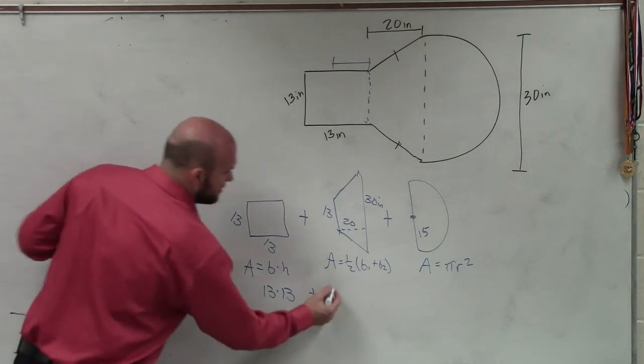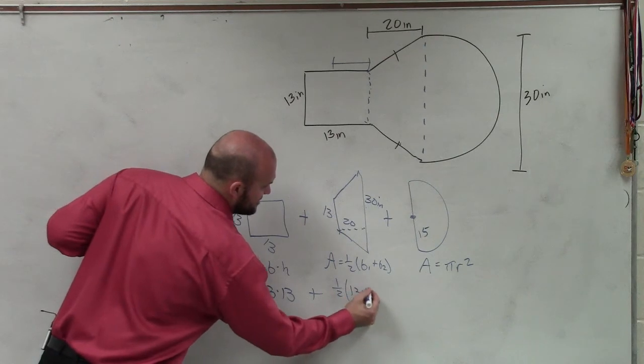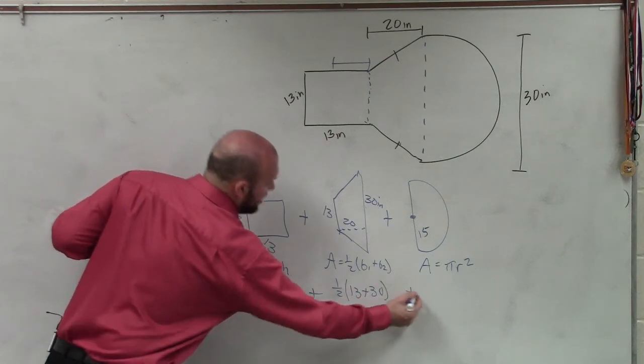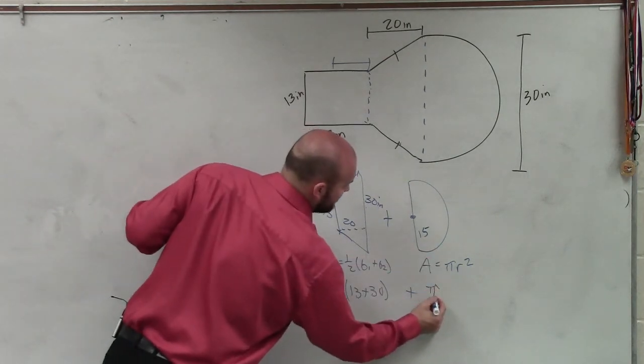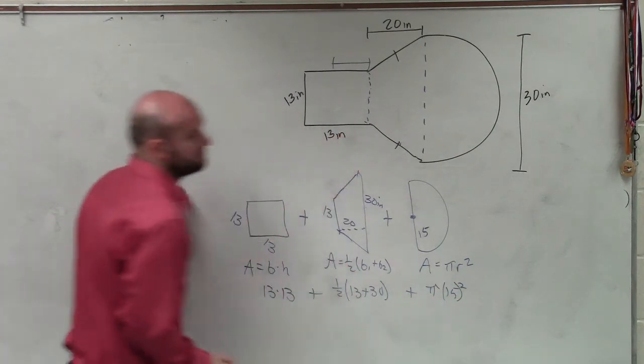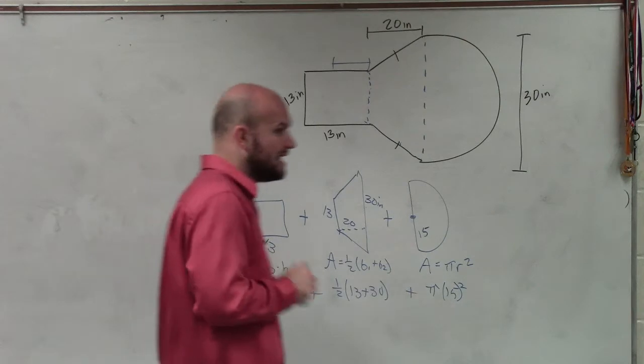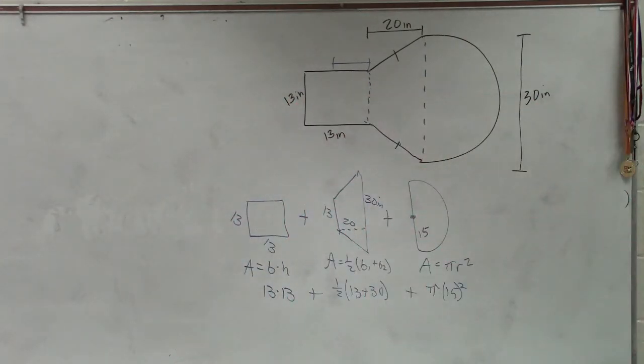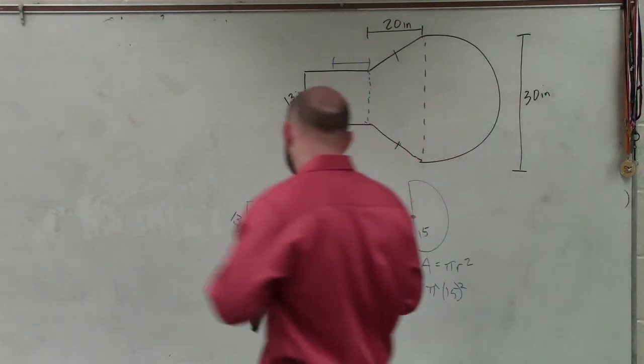Plus one half, 13 plus 30, plus this area is pi times 15 squared. So now, I just take my handy dandy calculator, and I just compute each one of these separately. 13 times 13 is 169.